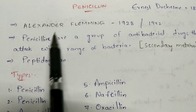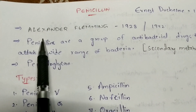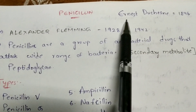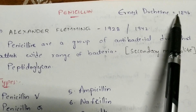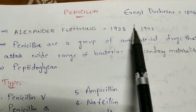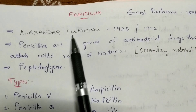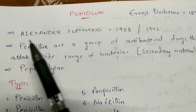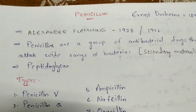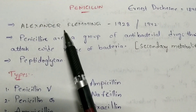Penicillin was first discovered by Alexander Fleming in 1928. But before Fleming, there was another person who discovered penicillin — his name is Ernst Duchesne. In 1896, he discovered a type of penicillin; specifically, the chemical properties of penicillin were first identified by this scientist. Alexander Fleming then rediscovered penicillin and gave a total description of it — how it is formed, from where it is formed, and how its production takes place. He is a Scottish scientist, born in Scotland.